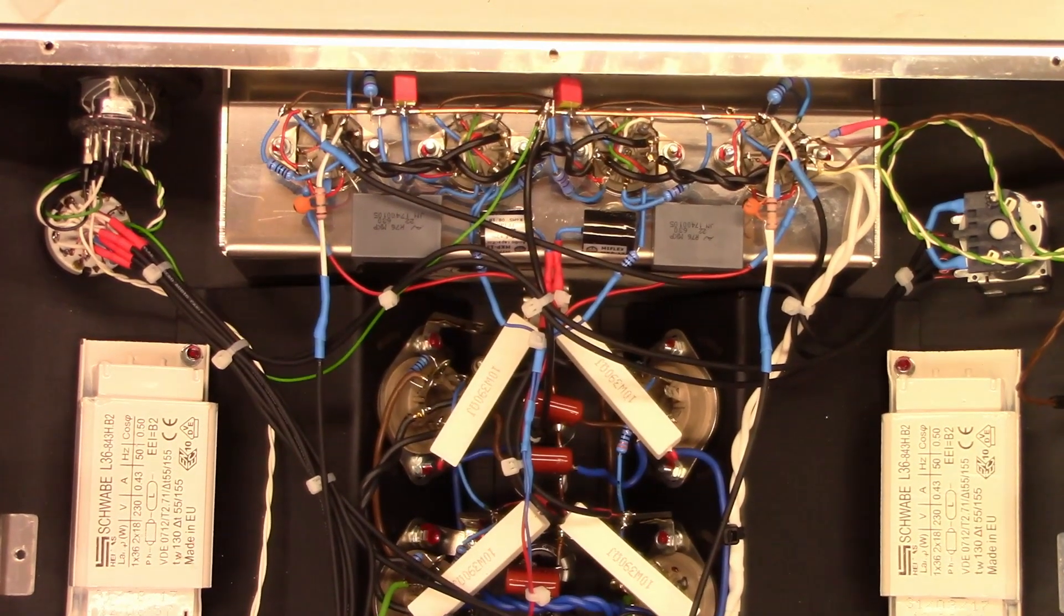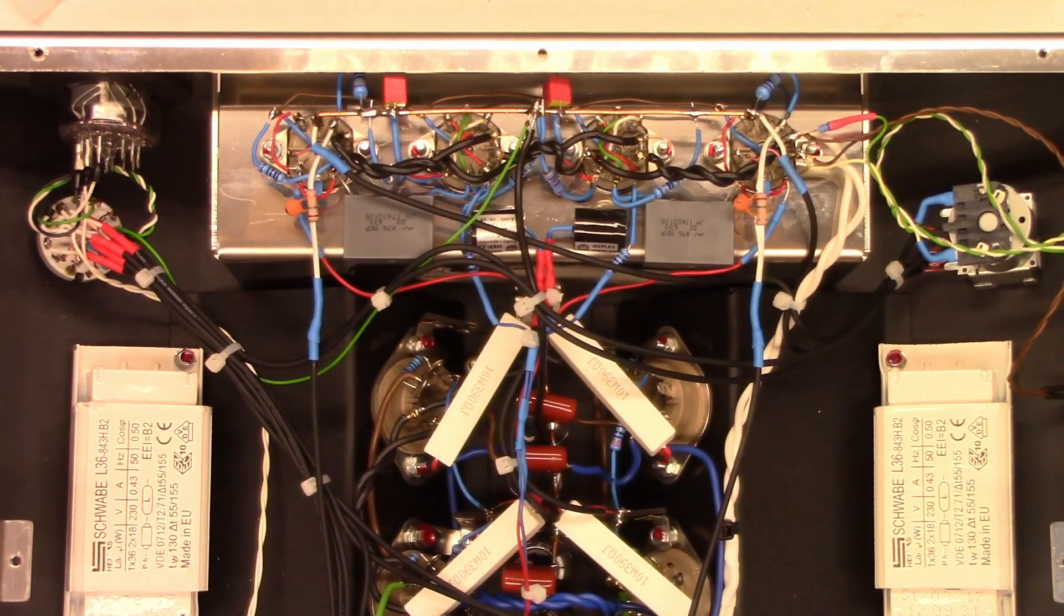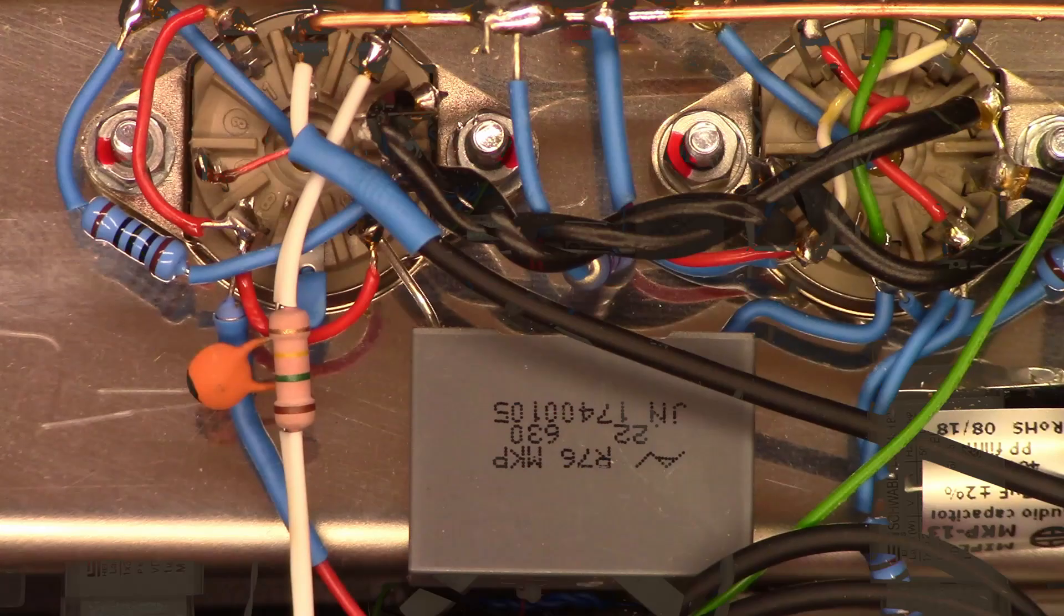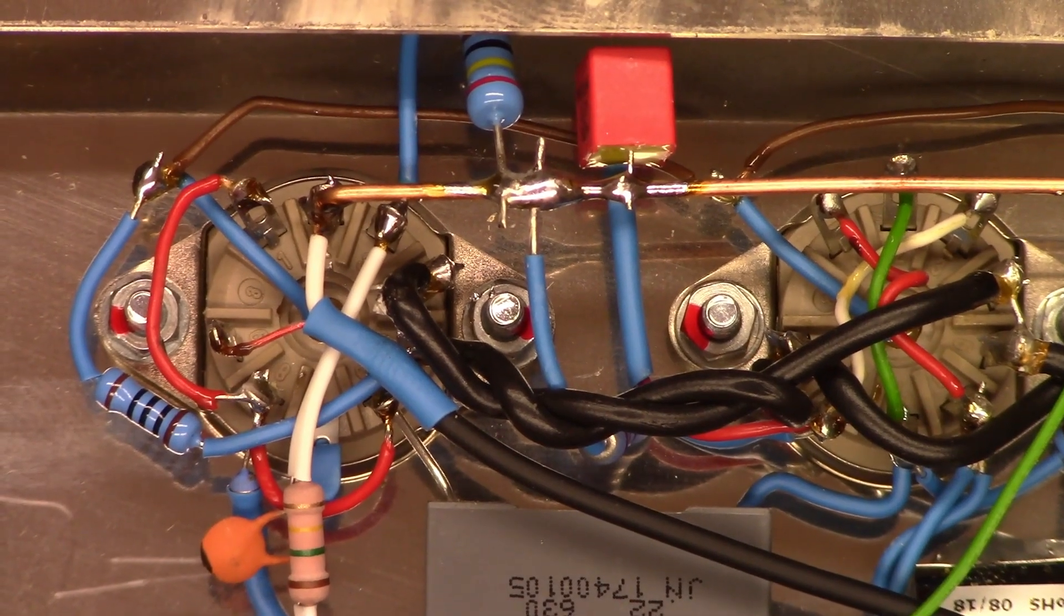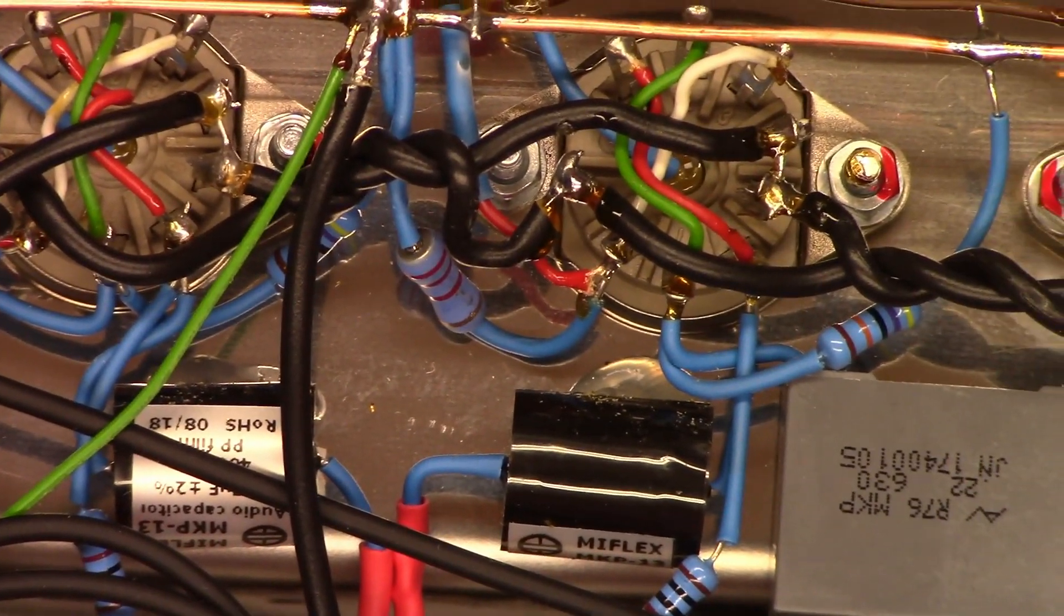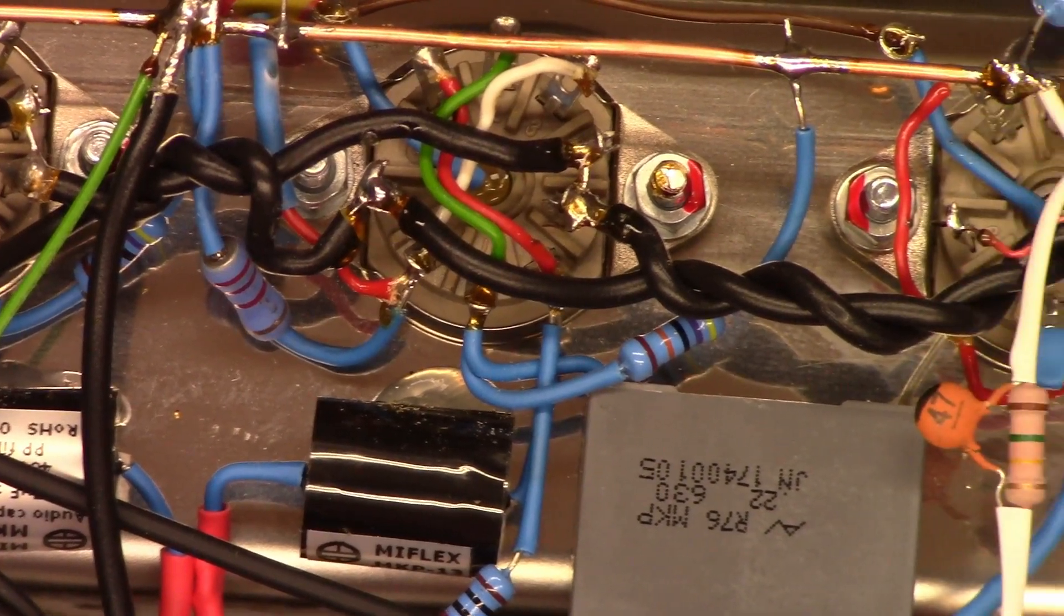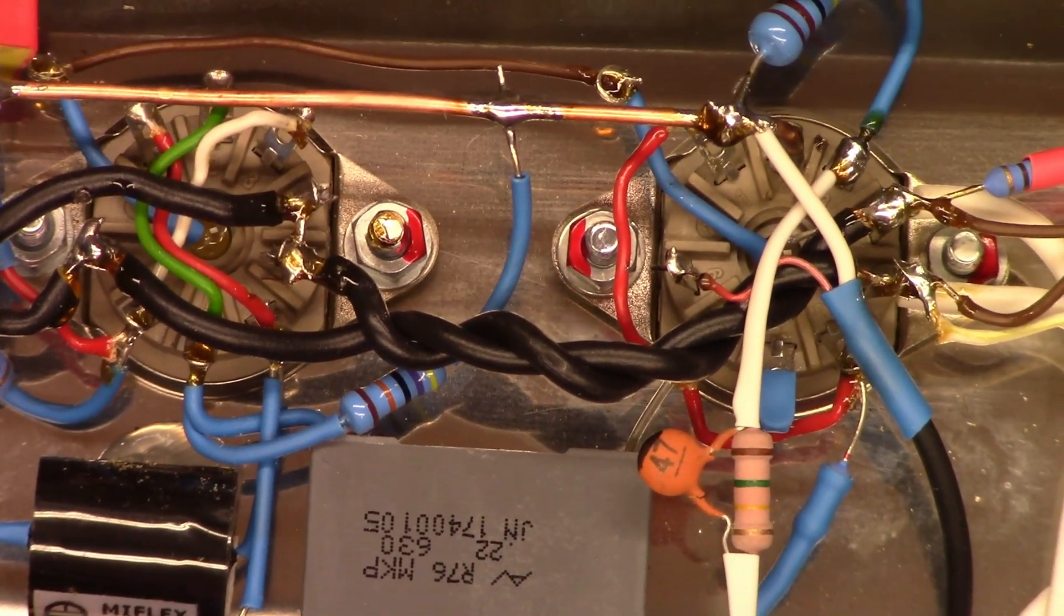There's the preamp circuitry. Once again, all point to point wiring. So there is the one channel of the preamp. Look at that. All point to point. Now look at that. There's the filament leads all twisted together to minimize interference.